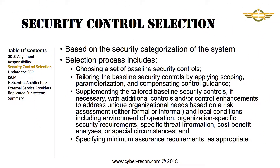Security control selection is set based on the security categorization of the system. This categorization will allow the identification of a baseline set of controls that will be used as the starting point for defining controls for the system. This baseline set of controls can then be tailored to meet the needs of the actual system by adding controls, removing controls, or modifying the parameters of a control to fit the risk-specific needs of the information system. This is all part of the tailoring process.